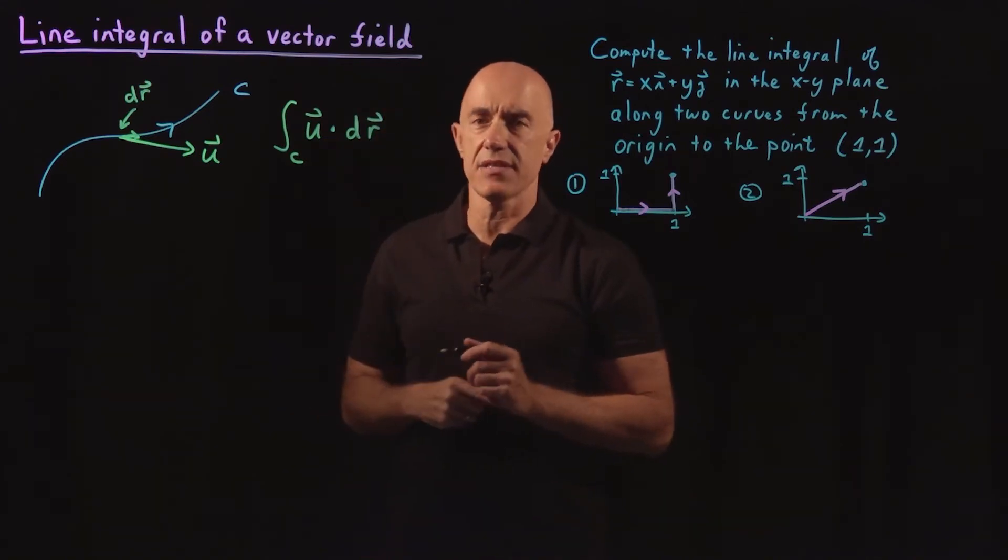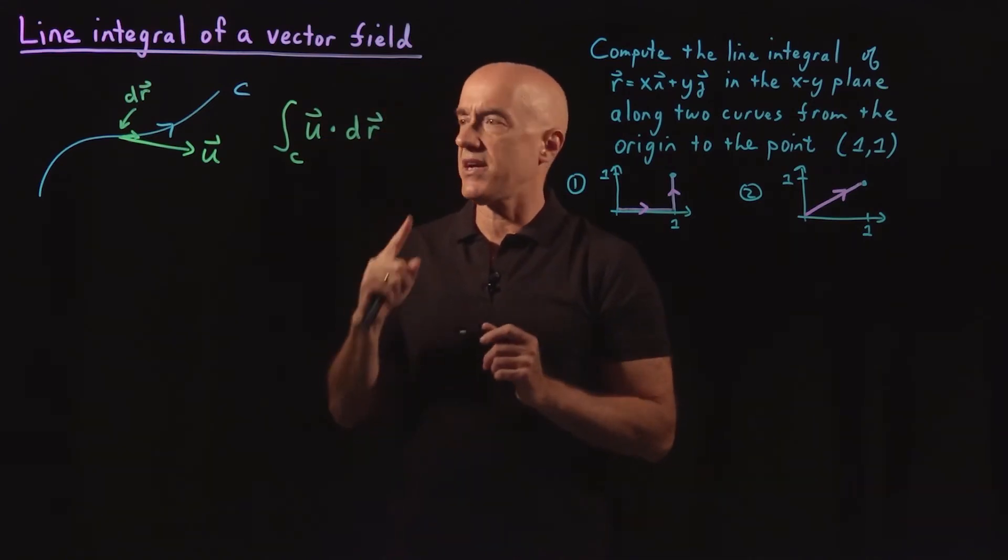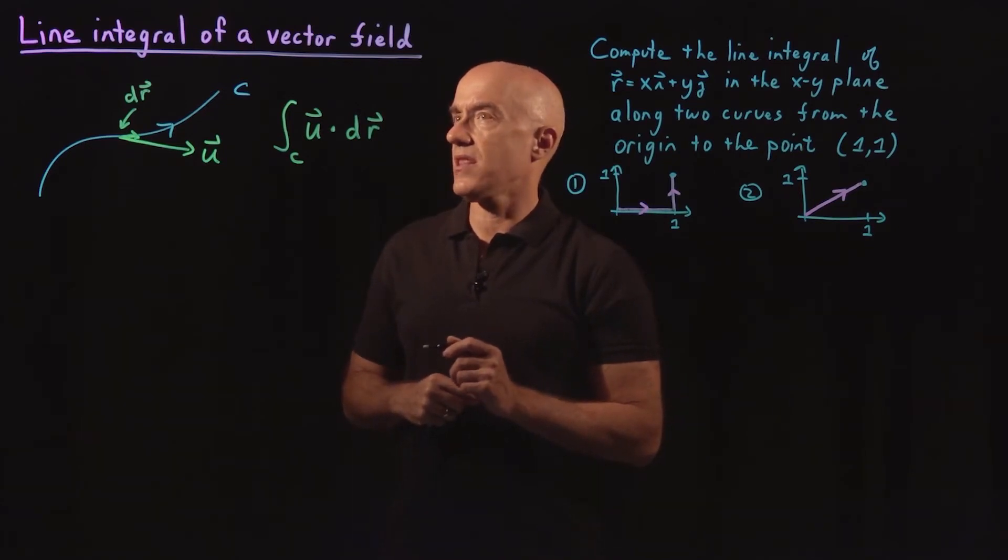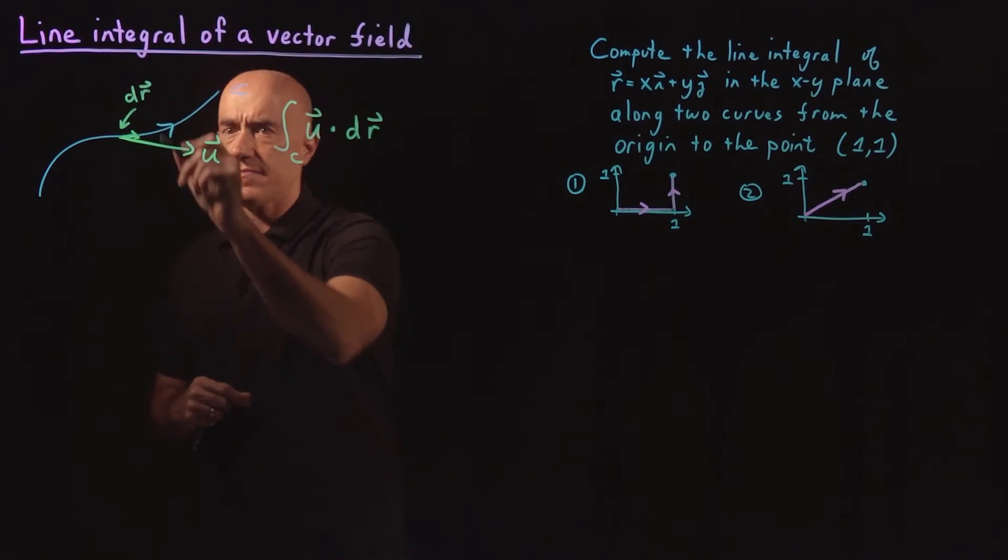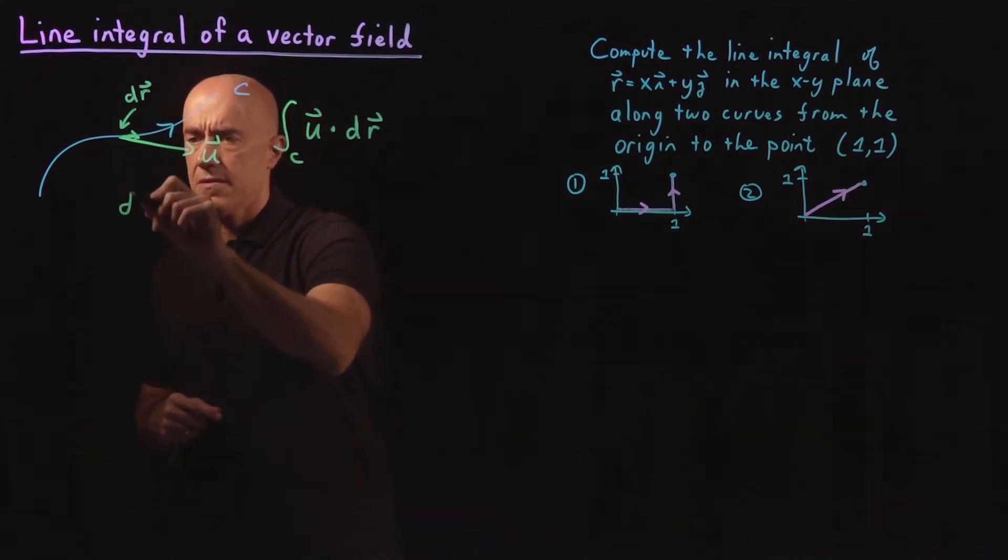But this can actually be written in terms of a line integral of a scalar field if we say that DR is equal to some tangent unit vector times DS.